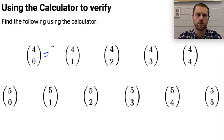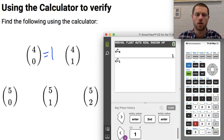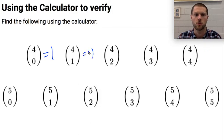So this is going to equal 1. For 4 choose 1, I could do the same thing. I'm just going to press second entry to get back what I just did, and I'm going to change the 0 to a 1 and that's equal to 4. So 4 choose 1 is equal to 4.